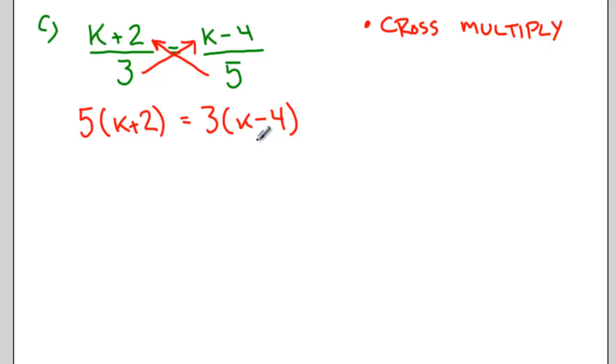So I have 5 times in brackets k plus 2 which when I distribute becomes 5k plus 10. On the right I have 3 times in brackets k minus 4 or 3k take away 12.